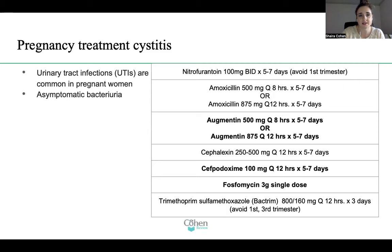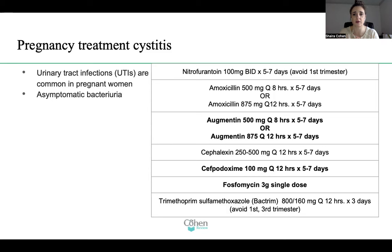With pregnancy, we treat asymptomatic bacteriuria. Pregnant women provide a urine sample on every visit, and if bacteria are found in the urine — even if they're asymptomatic — you treat. Nitrofurantoin is an option but preferably avoided in the first trimester; it's not an absolute contraindication, but weigh the risk versus benefit. Amoxicillin is a great, benign drug for pregnancy: 500 mg every eight hours for five to seven days, or 875 mg every 12 hours for five to seven days.